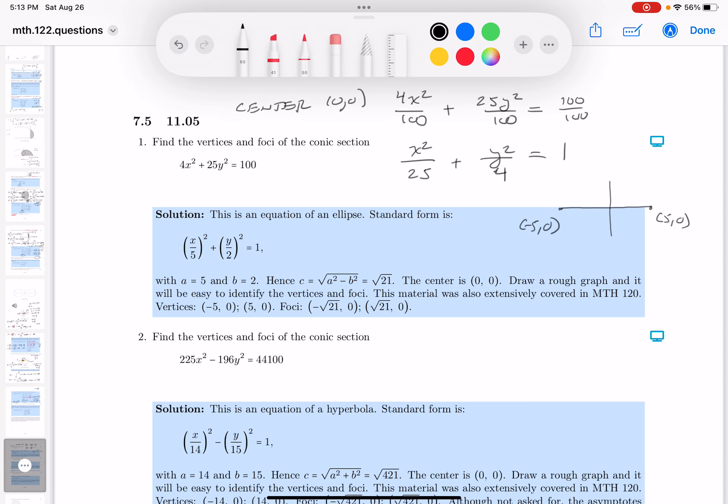Now, if x is 0, the y would be plus or minus 2. That's going to be (0, 2), (0, -2). So, again, not the best-looking picture. It's an ellipse, centered at the origin.